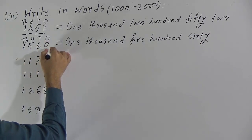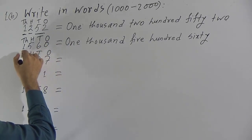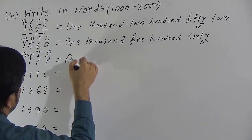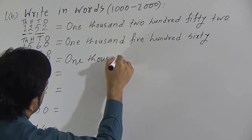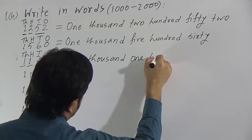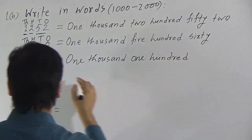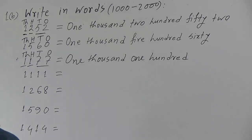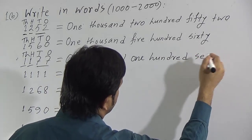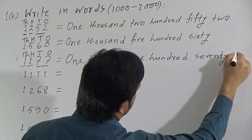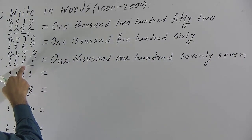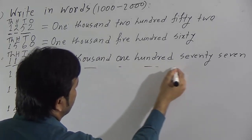Now go to the next question. 1's position, 10's position, 100's position, 1000's position. We write 1000. Then 1 is in the 100's position, so we write 100. Reading the last 2 digits together: this is 77. So we write 77 here. So we can say 1177.